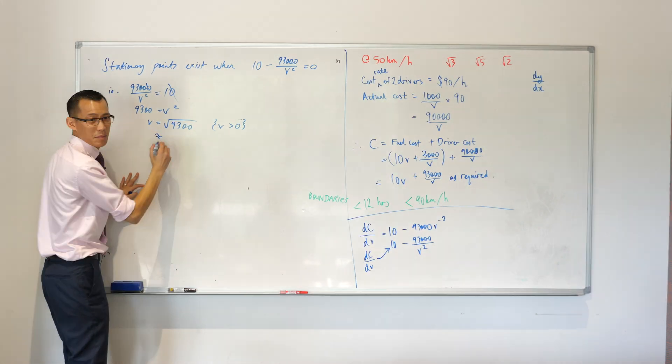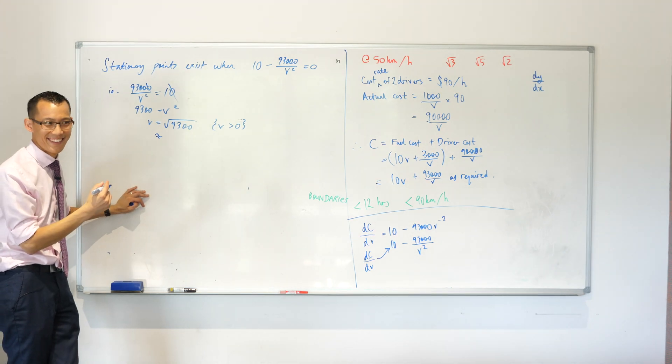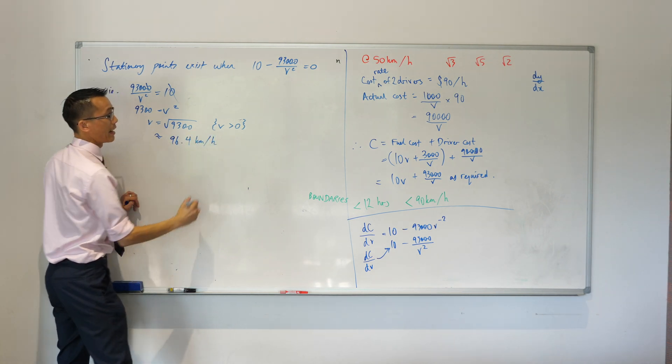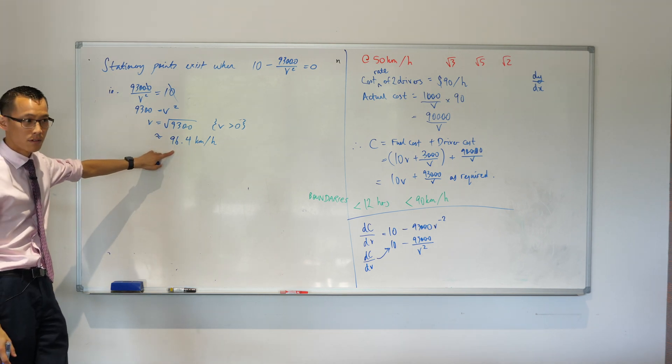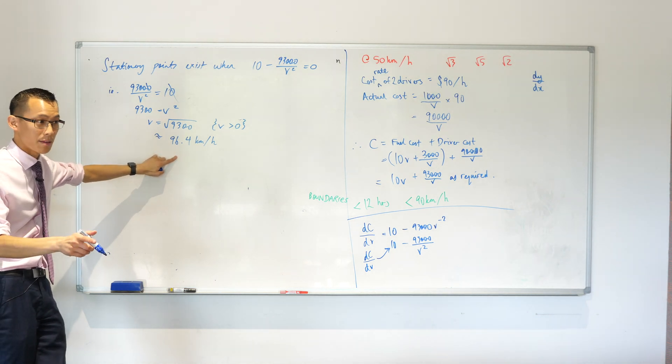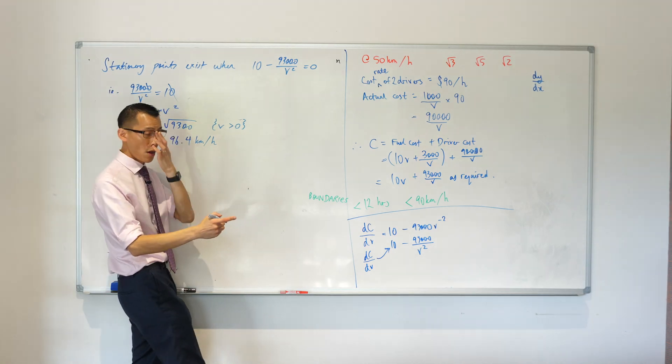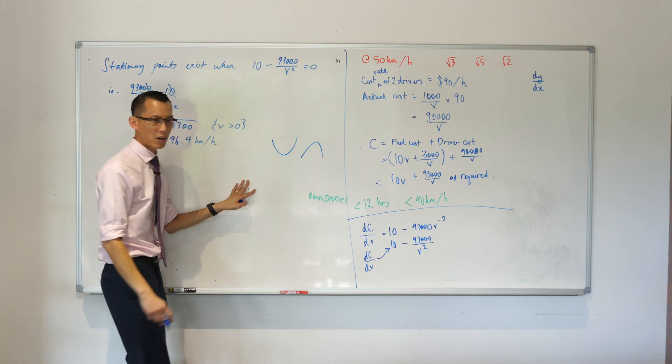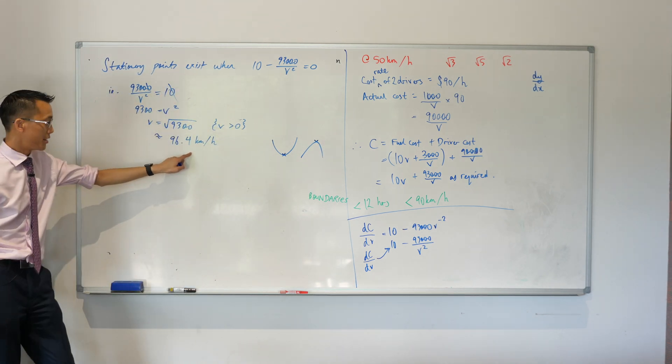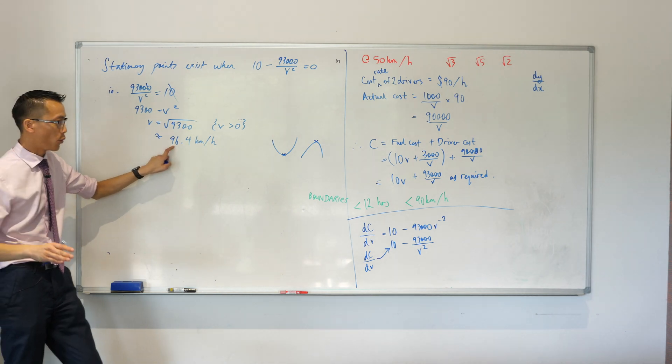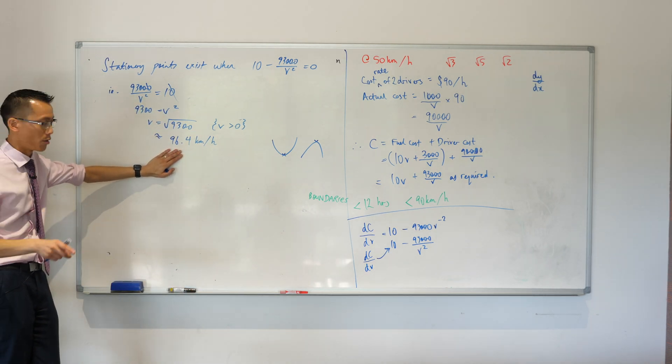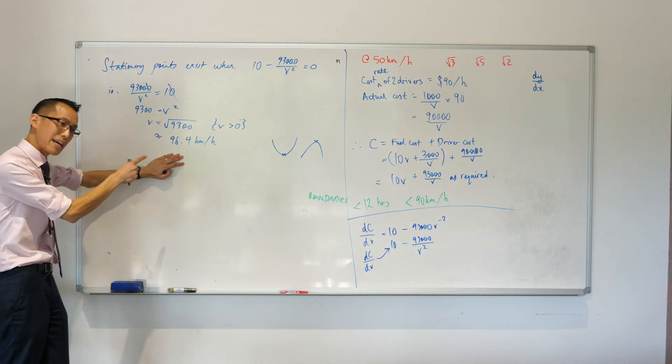Can someone give me that as a decimal? What is the square root of 9300? 96.4 kilometers per hour. Now have a look at this. Is this okay? Is this acceptable? If I'm not mistaken, I've already hit a problem. I'm over the speed limit. This is exactly what I was talking about before. You don't know what kind of stationary point it is. But now what I've found is my stationary point is not even within my boundaries. This will apparently minimize the cost, maybe. We should differentiate again to be sure. But I can't even go at that speed.